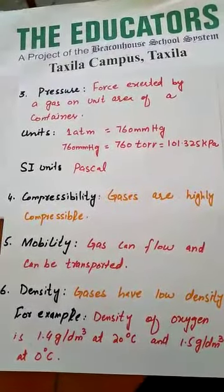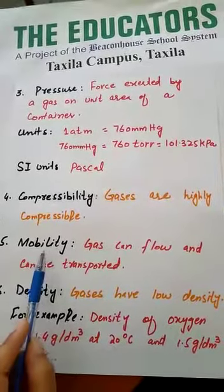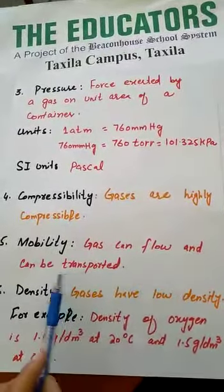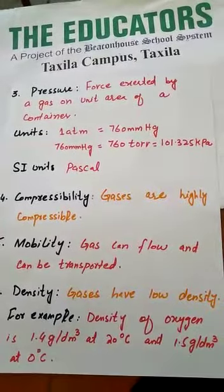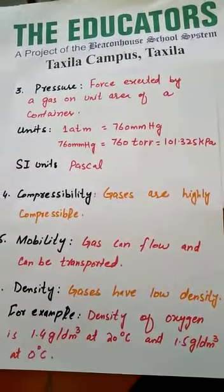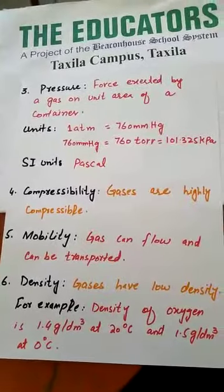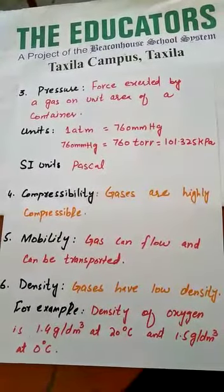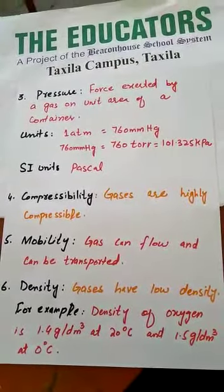The fifth property is mobility. Gas can flow and can be transported. Gas flows and can also be transported through pipes over a long distance, but it can also leak more rapidly.